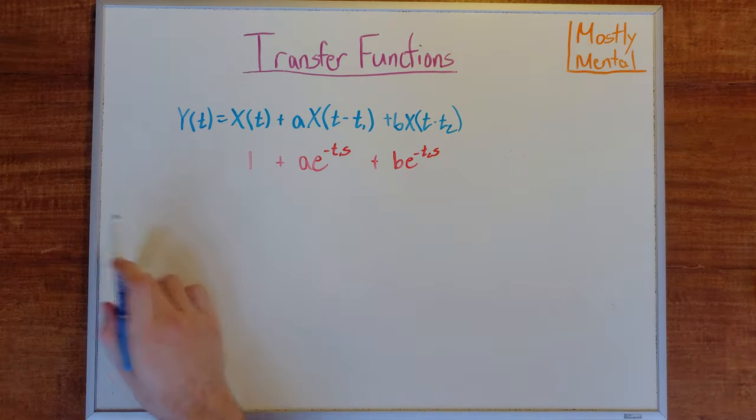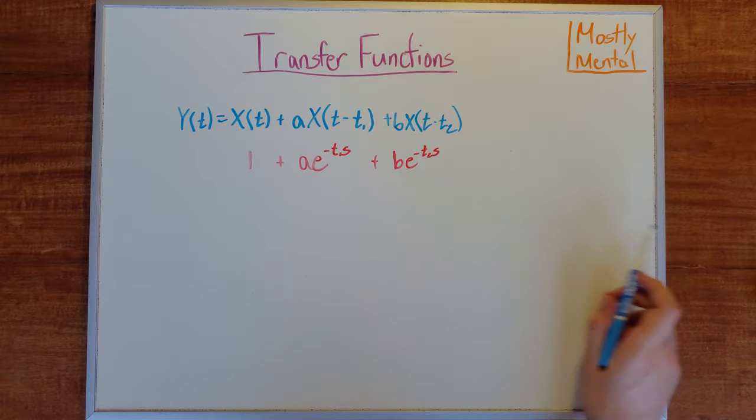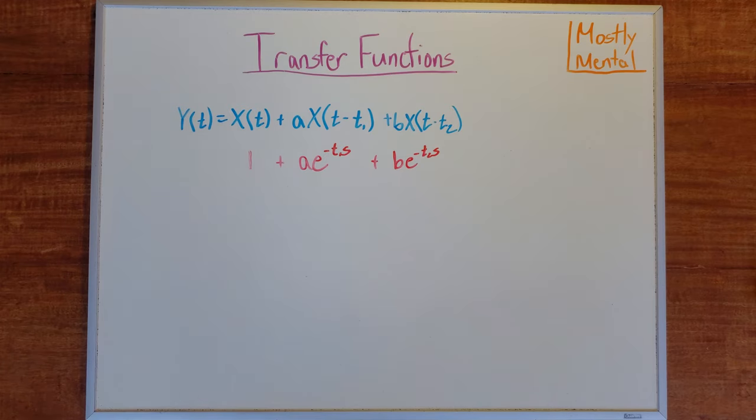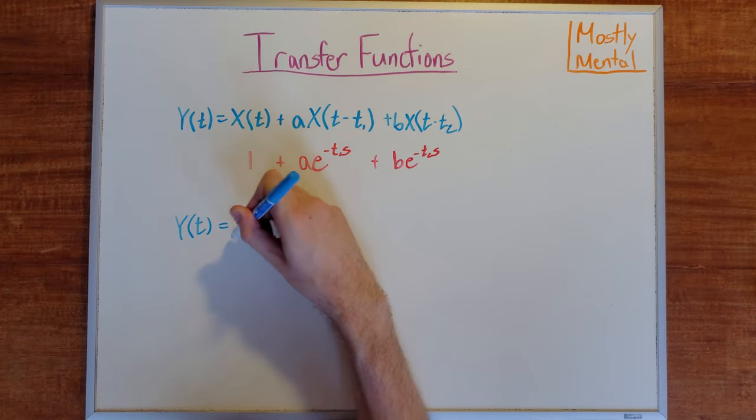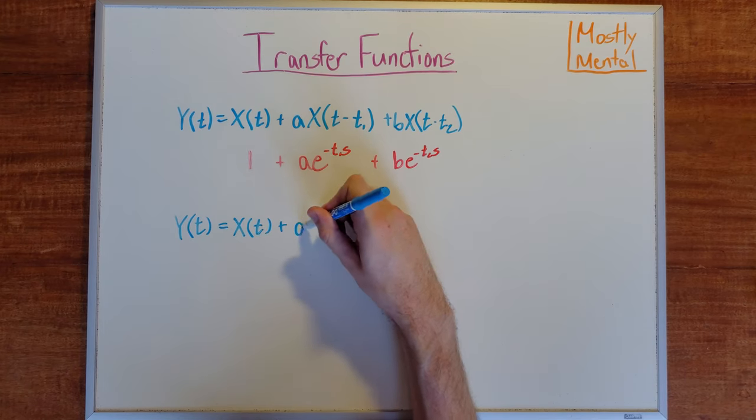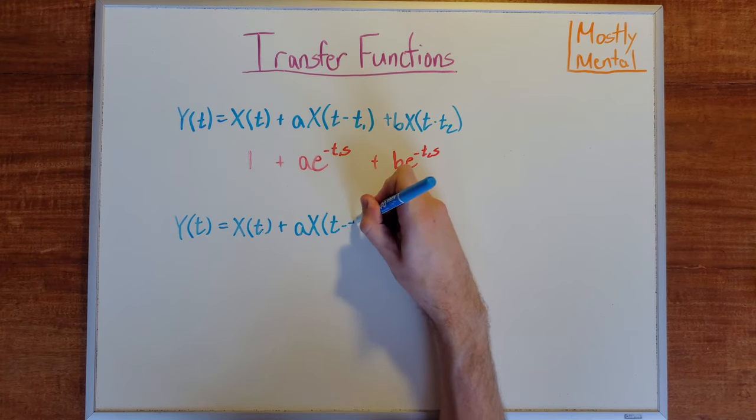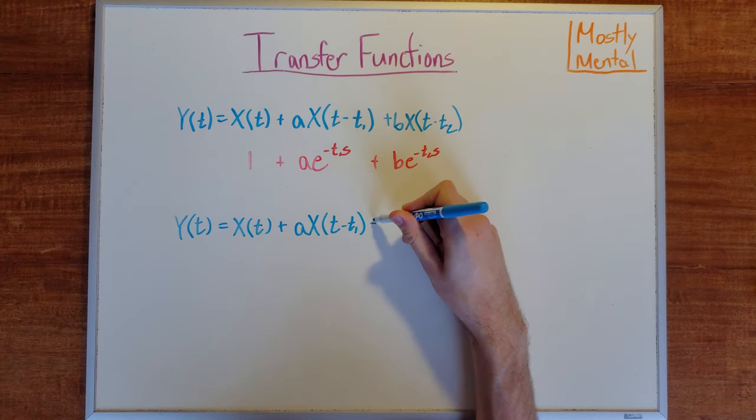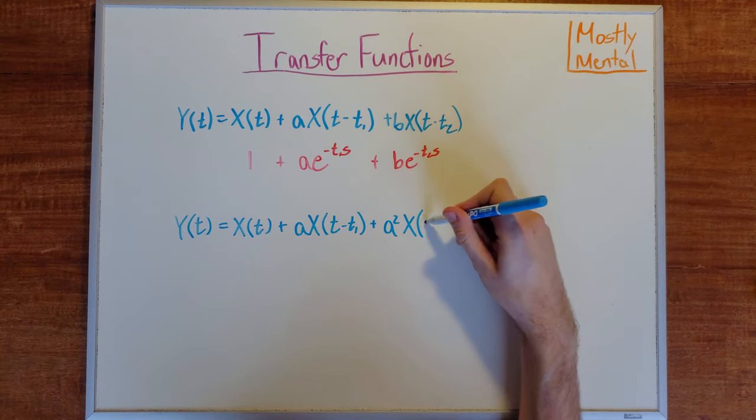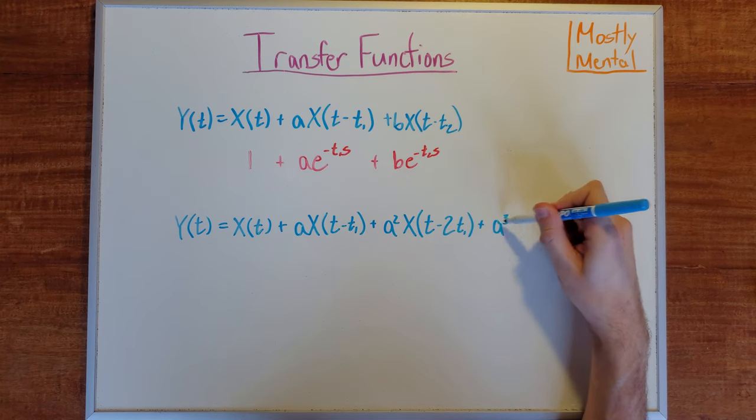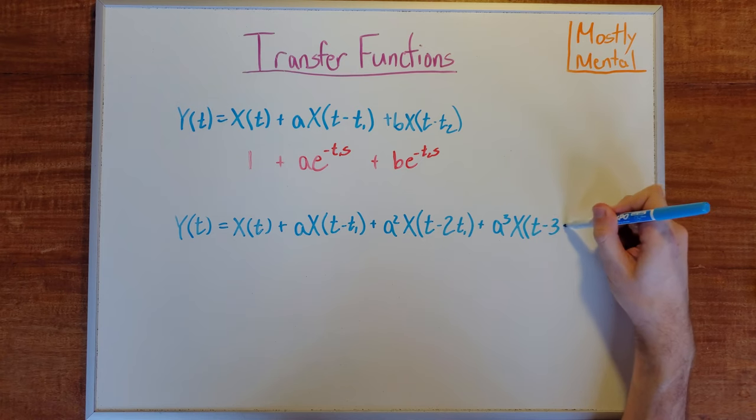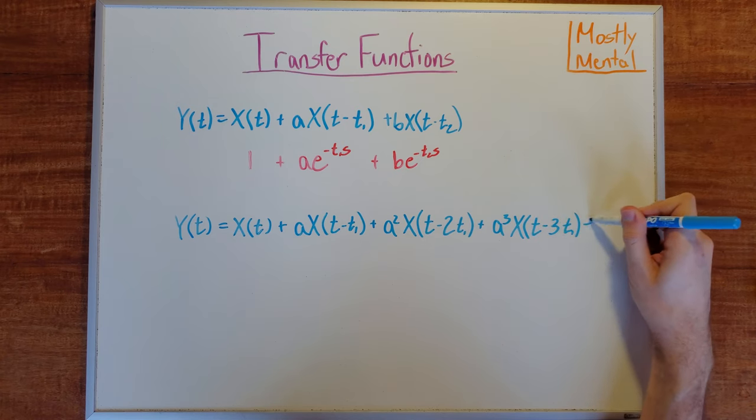Or our sound might echo back and forth forever between two parallel walls. That would mean that both the delay between bounces and the decrease in volume are constant, which gives us y of t is x of t plus some constant times x of t minus t1, plus a squared x of t minus 2t1, plus a cubed x of t minus 3t1, and so on.